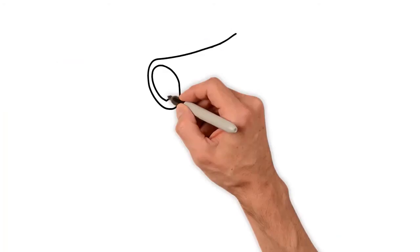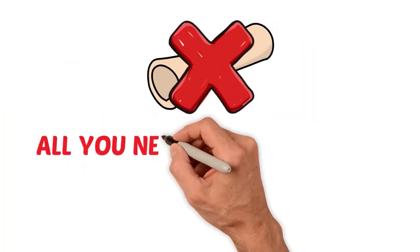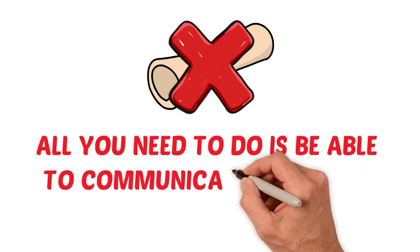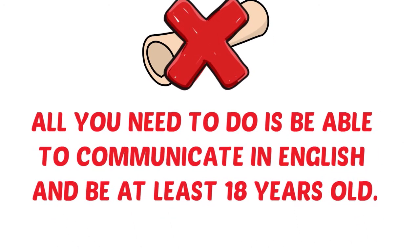No high school diploma or any special prerequisites are required to train as an EMT. All you need to do is be able to communicate in English and be at least 18 years old.